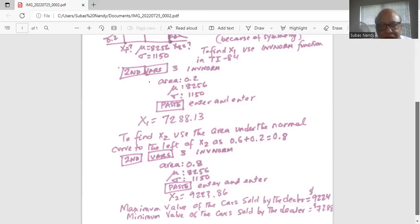So maximum value of the car sold by the dealer is 9,224 and the minimum value sold by the dealer is 7,289, rounding off.